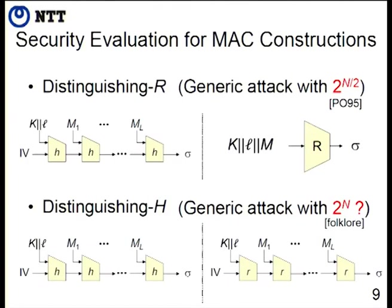Let's consider the attack framework for MAC construction. The most popular framework is the forgery attack, but distinguishing attacks are also possible. We have two frameworks of distinguishing attack. The first is called distinguishing-R, where the attacker aims to distinguish the target construction from a random oracle computation. A generic attack is known for distinguishing-R with complexity 2^(N/2) — discovered by Preneel and van Oorschot in 1995.